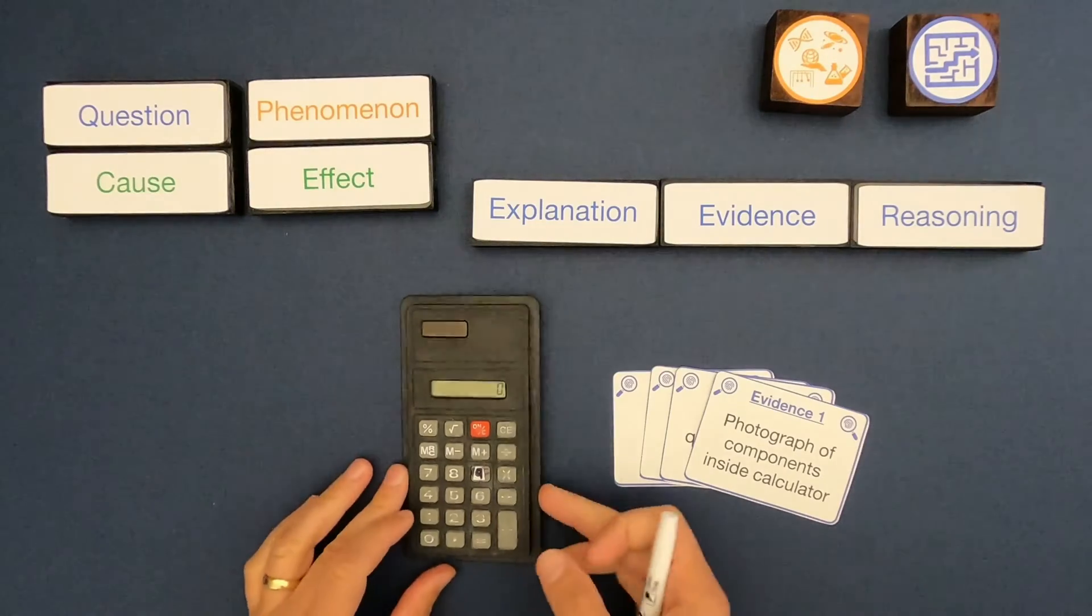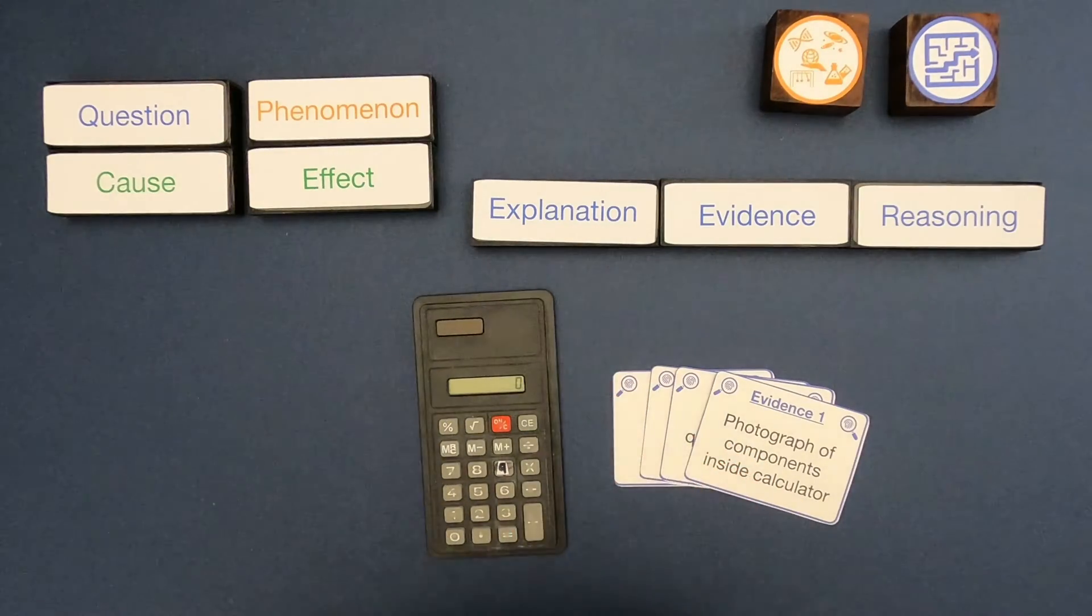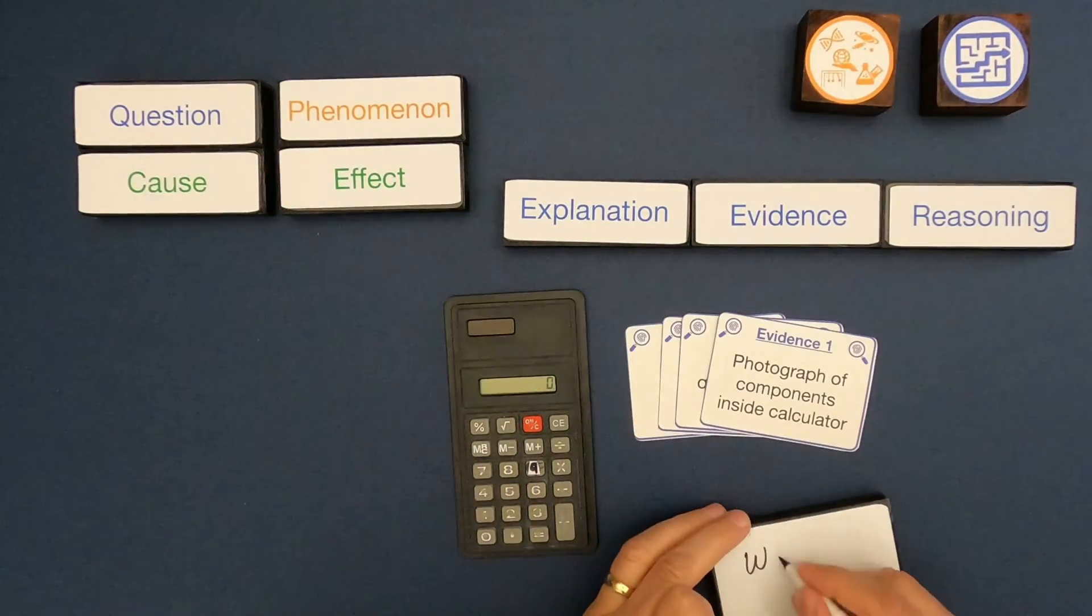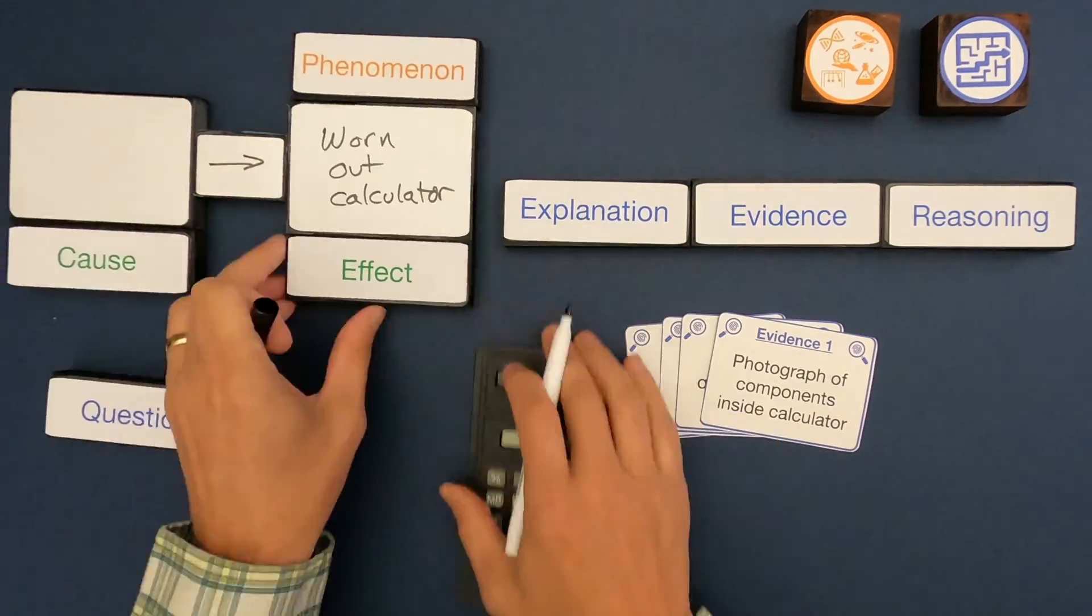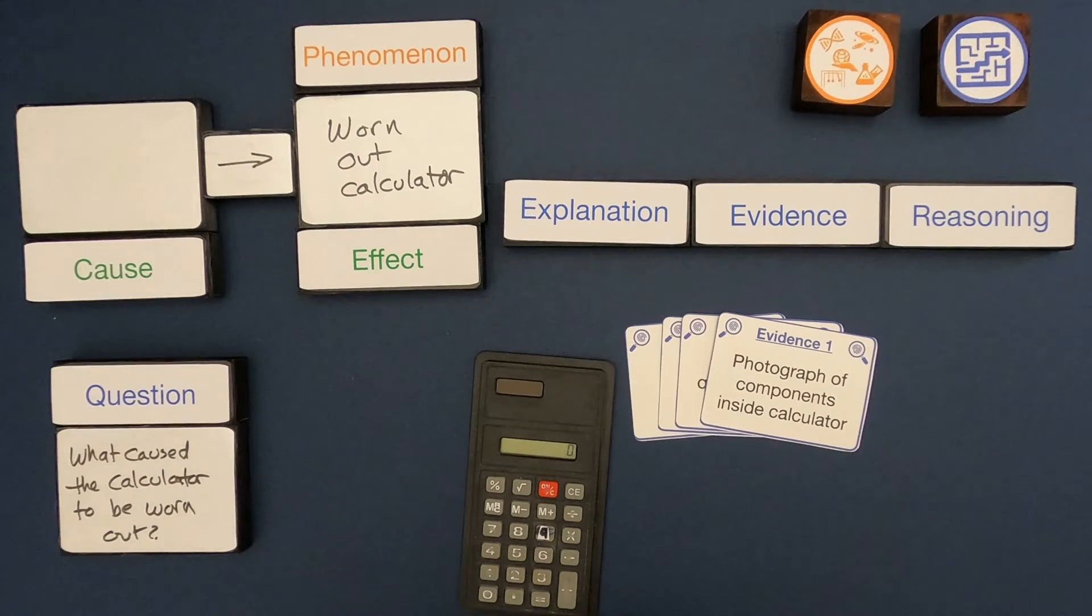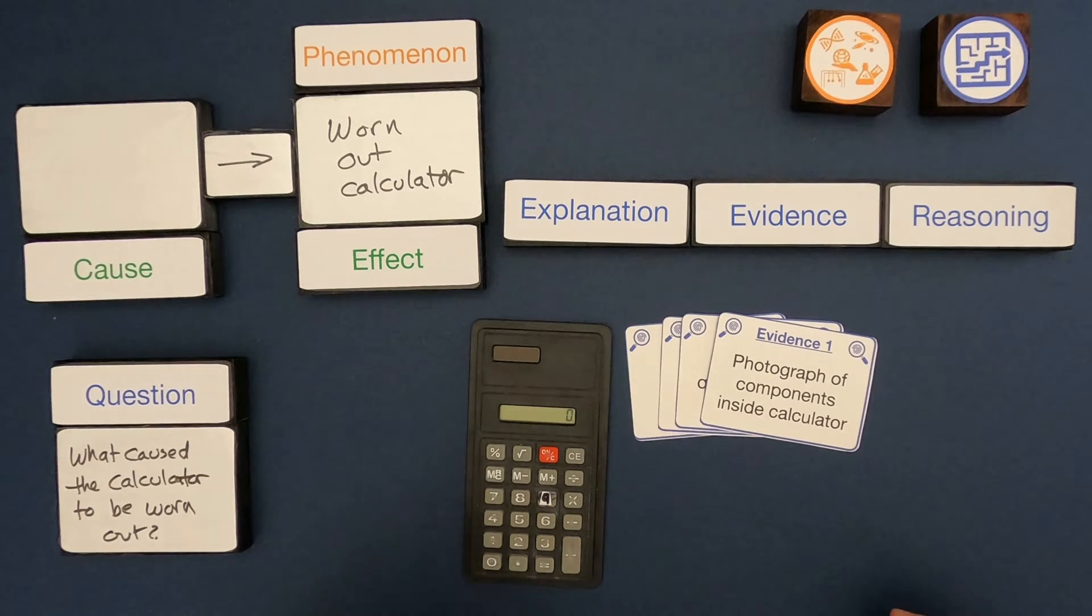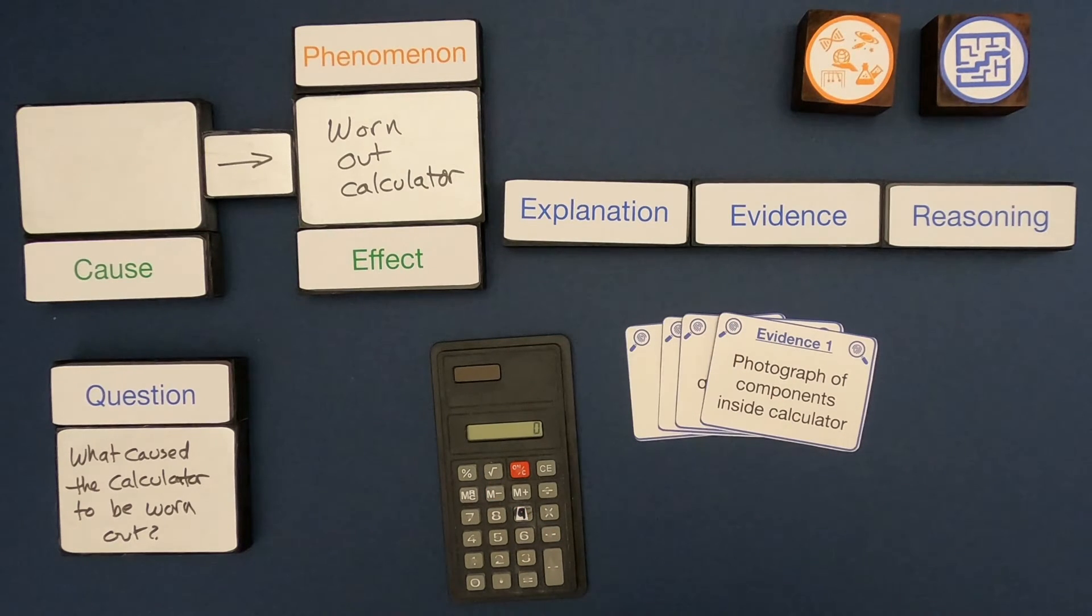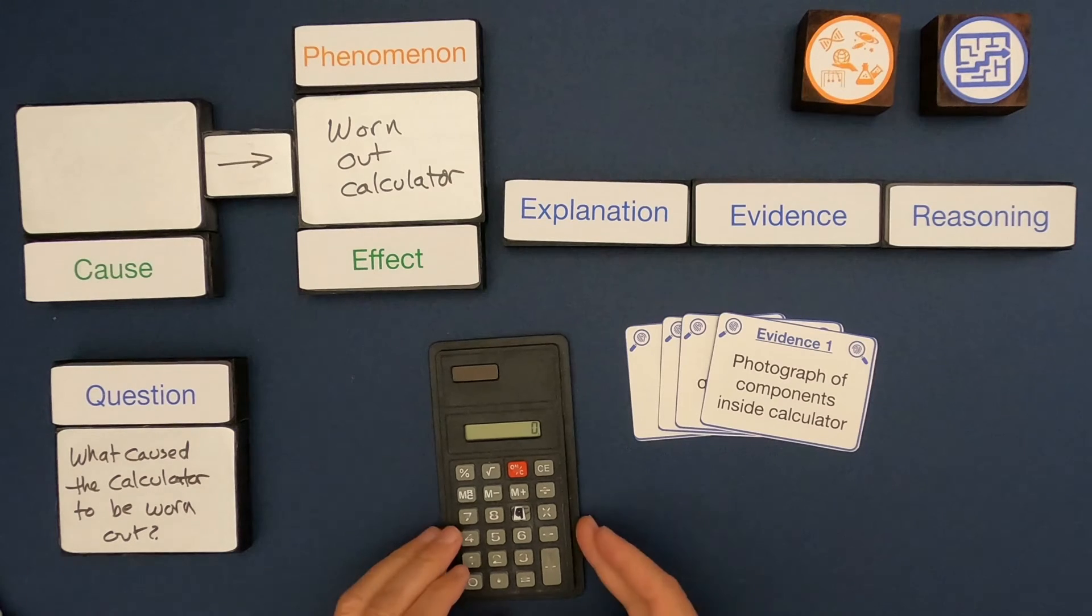The first thing I would do, I've got a really worn calculator. First thing I would do is I would write down what's the phenomenon and then what's the question. We've got a phenomenon or the effect of a worn-out calculator or a well-used calculator. We've got a question about what caused it. Now you might just jump to an explanation, so it's got to have been used, but there's still a lot of evidence that we need to look at.